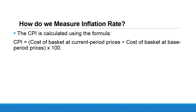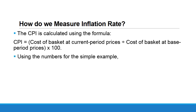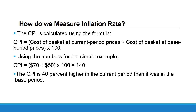The CPI is calculated as follows: CPI equals the cost of the basket at current period prices divided by the cost of the basket at base period prices, times 100. Using our example, CPI in 2018 equals $70 divided by $50, times 100, which equals 140. Note that in the base period, the CPI is always equal to 100. So the CPI is 40 percent higher in the current period than in the base period.